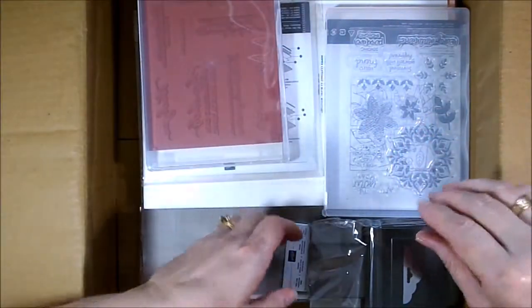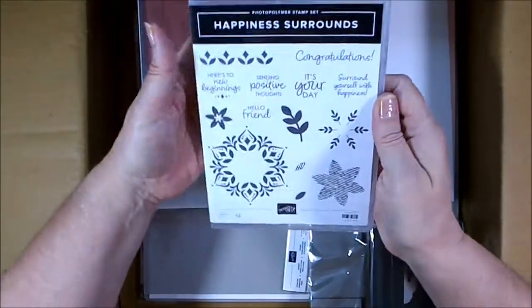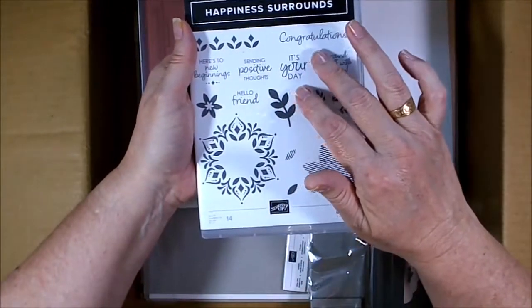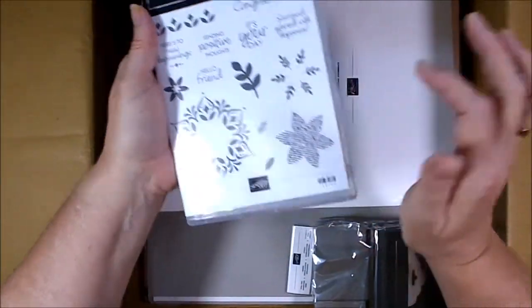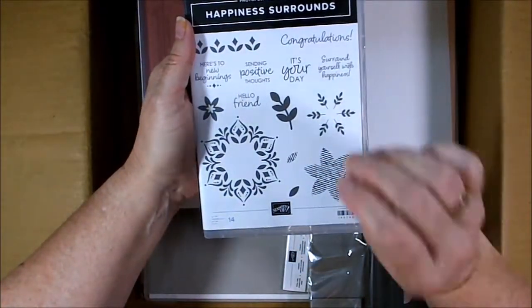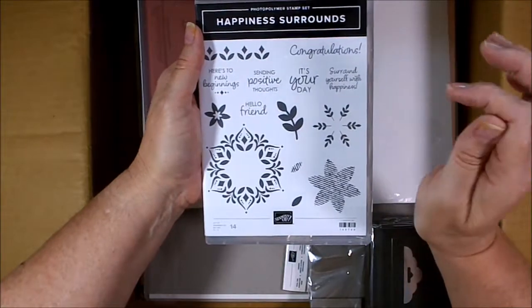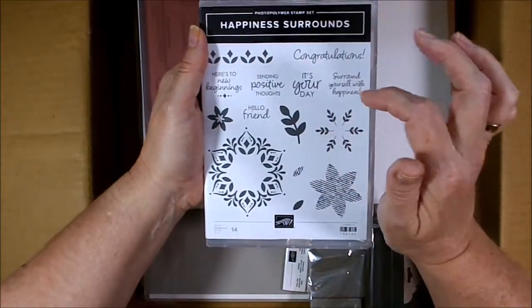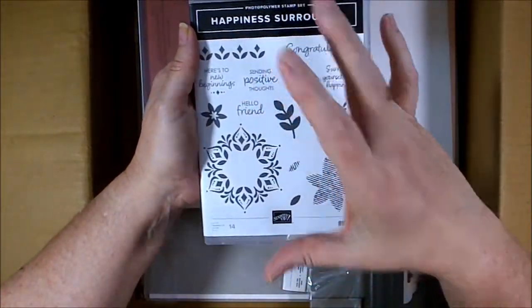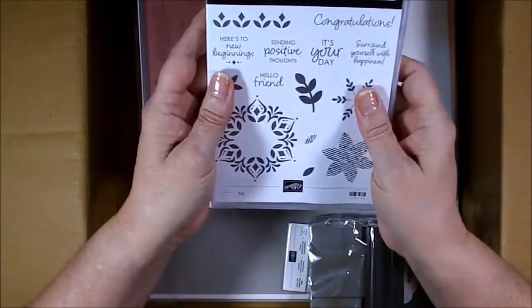Another part of the limited edition is this Happiness Surrounds stamp set. There's actually two stamp sets, and I'm not sure why, but I didn't order the other one. This one's got a lot of different sentiments which aren't just for the silly season: congratulations, surround yourself with happiness, it's your day, sending positive thoughts, hello friend, and here's to new beginnings. This can be used for so many different things, and it's a photopolymer stamp, so even though it'll stain, it doesn't harm the stamps. Beautiful set.